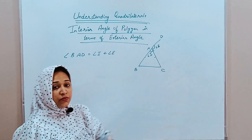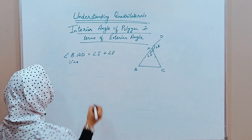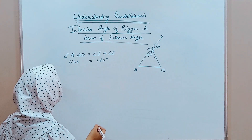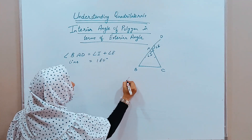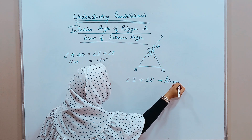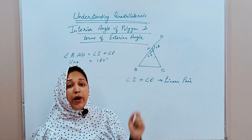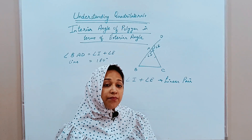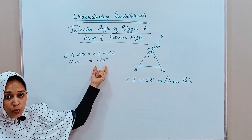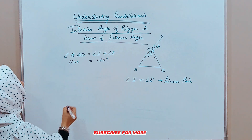Now if you observe, angle BAD is a line. Since angle BAD is a line, the complete angle will be equal to 180 degrees, because if it is a line it makes a linear pair. So angle I plus angle E is a linear pair. A linear pair means the sum of these angles equals 180 degrees, because it is forming a straight line. Since we have a straight line it forms a linear pair and the sum is equal to 180 degrees.